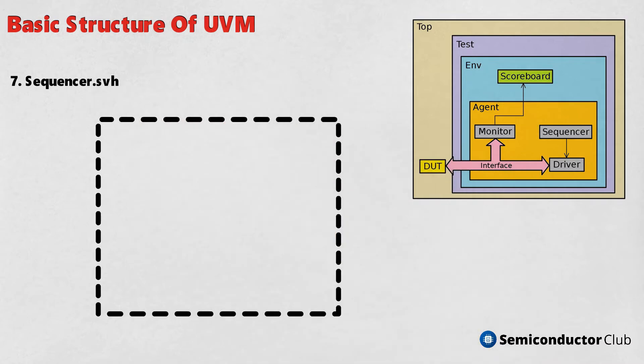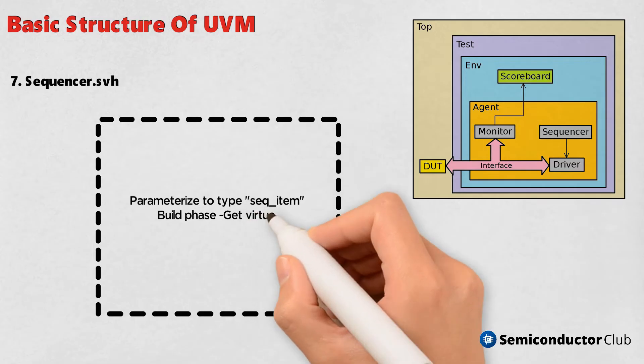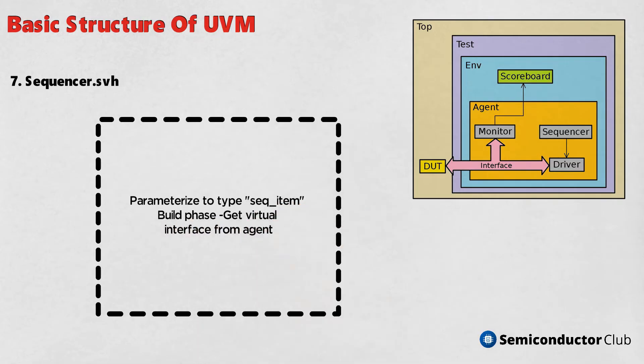7. Sequencer.svh - Parameterize to type seq_item. Build phase: get virtual interface from agent.